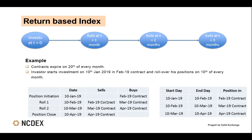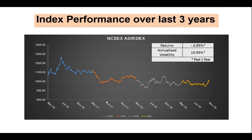Our contract expires on the 20th of each month and we roll over before a certain date to make sure we roll over before the liquidity starts shifting. Looking at the past three-year performance chart of AgriDex, the index was going up until July 2016, after which the market was in a slight bearish phase and then pretty much flattened out. During this flat period, the underlying prices were slightly gaining but because this is a total return-based index, the carry has been subtracted from the return, resulting in a flat market picture.